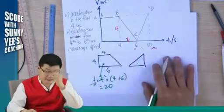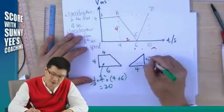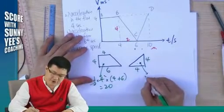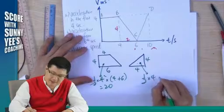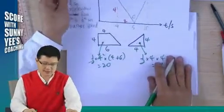And what about this? The base is how much? 6 to 10. 4. The height is how much? 4. So this area is a triangle. Half times base times height. This is 8.